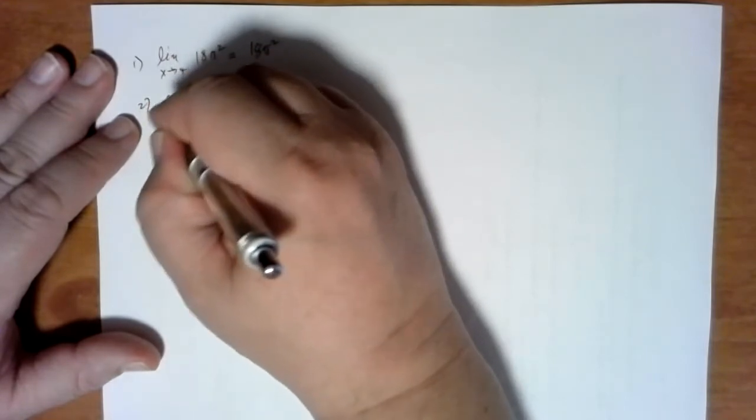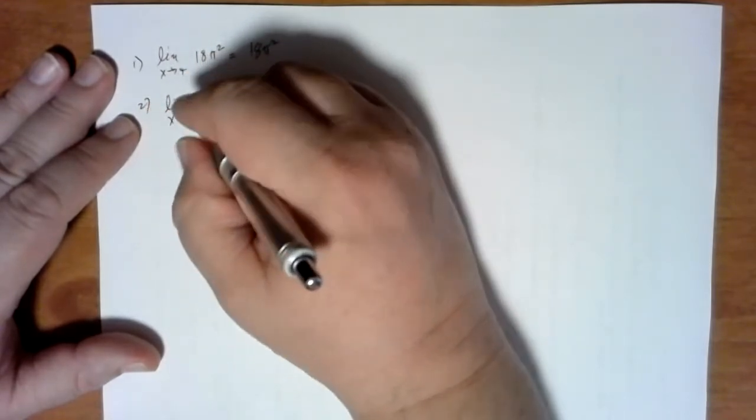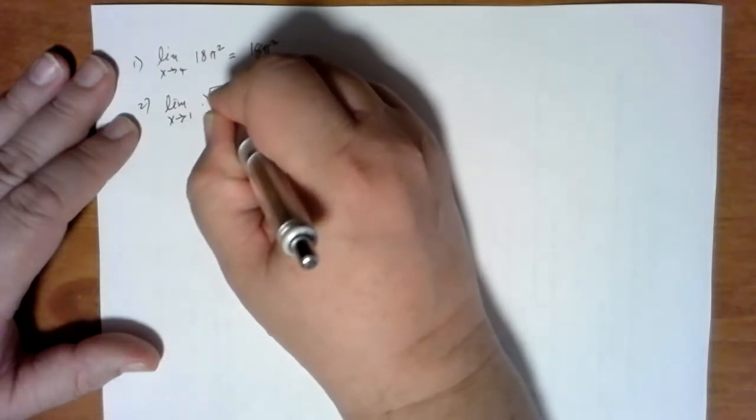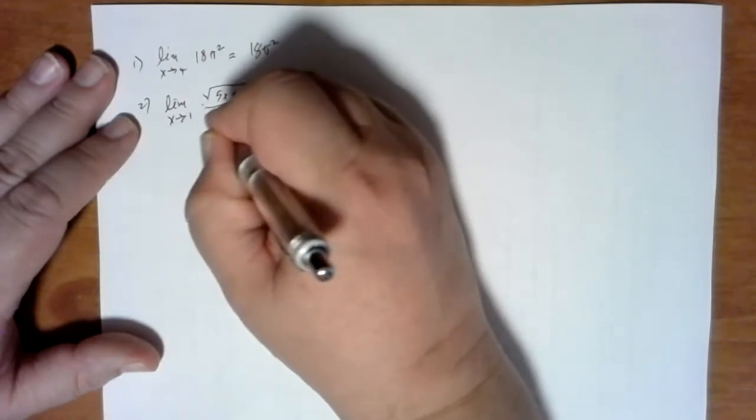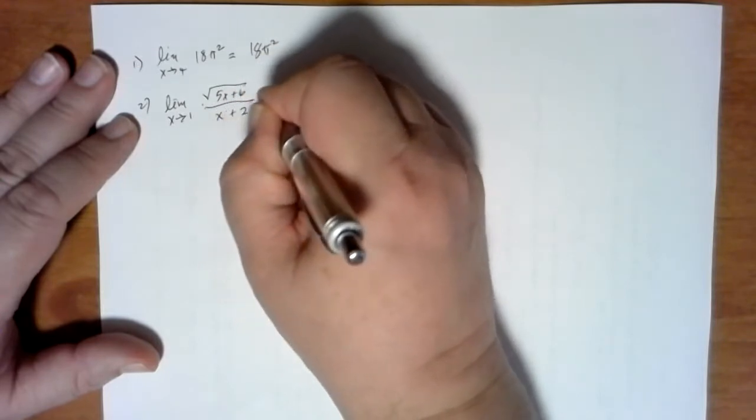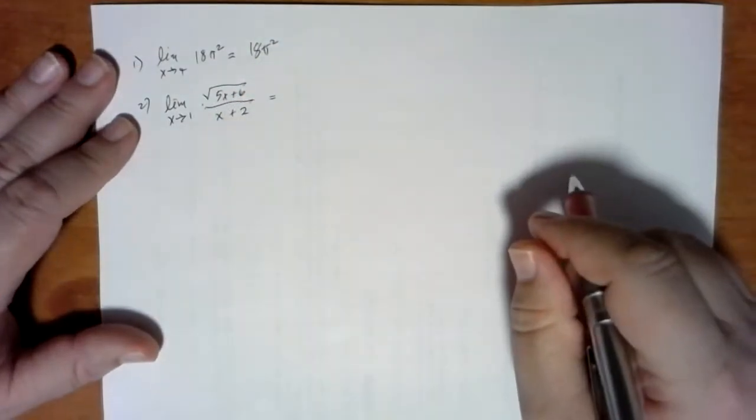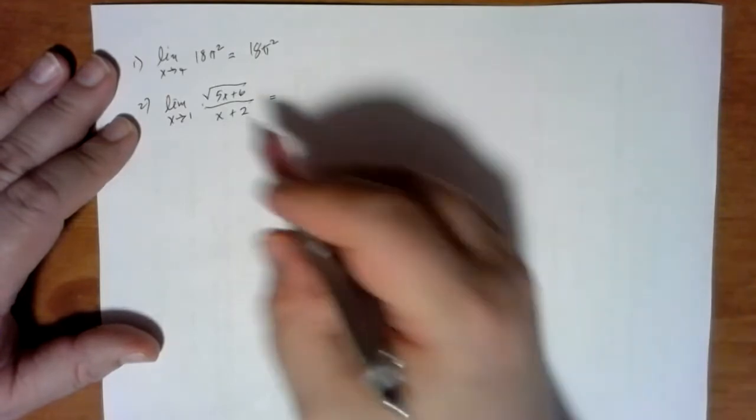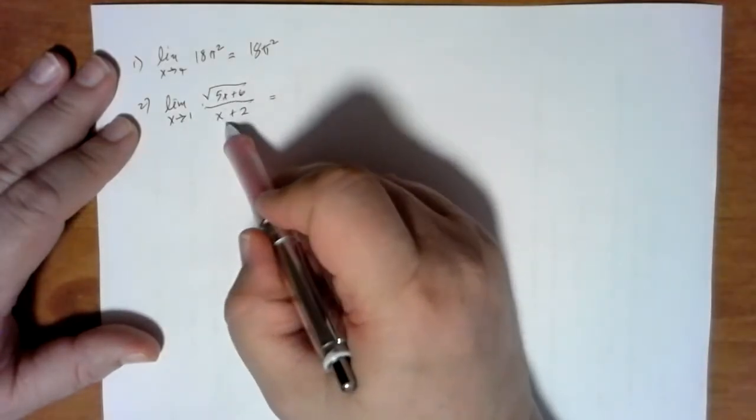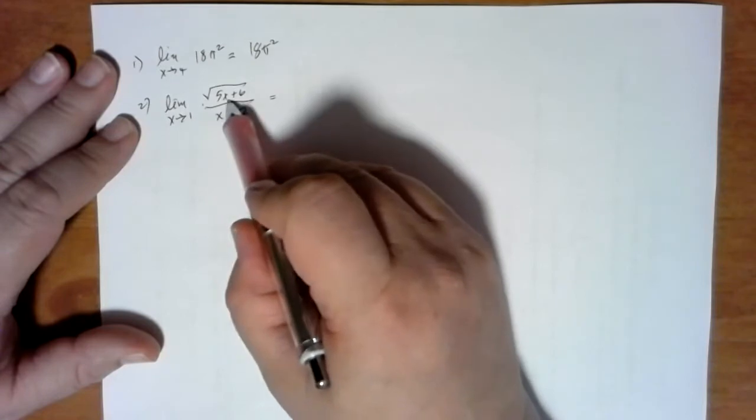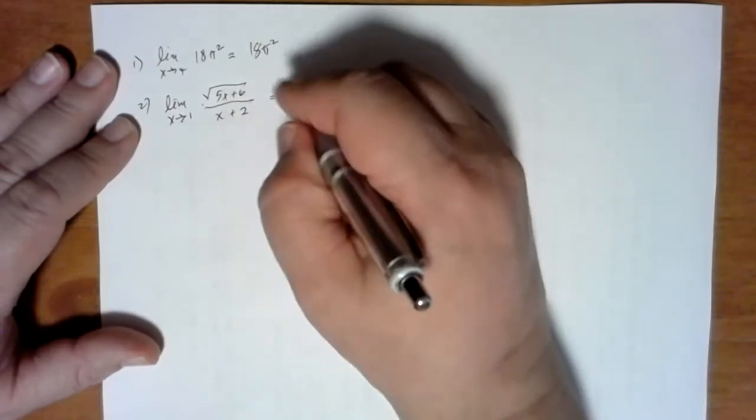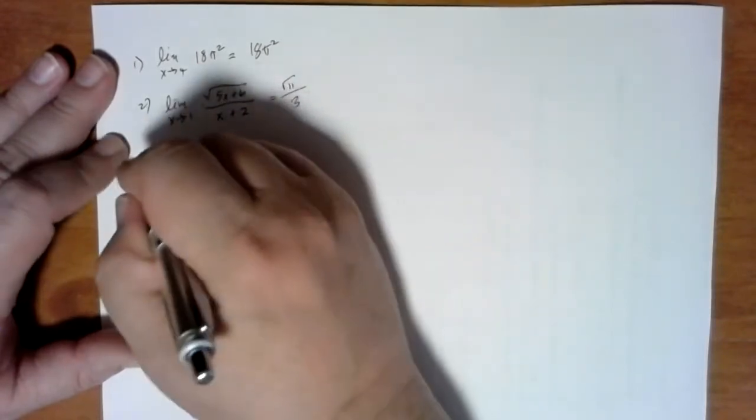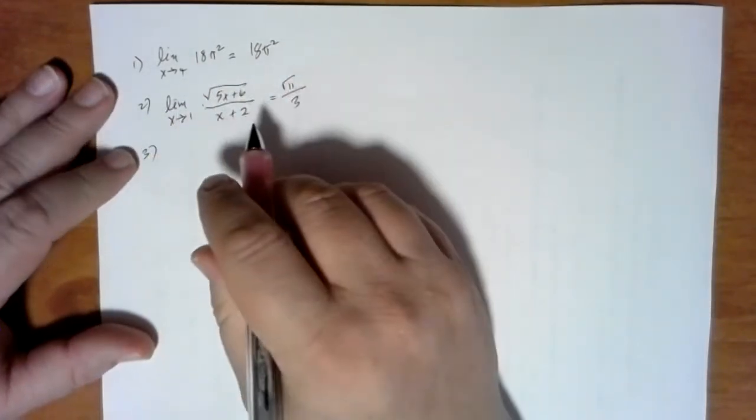How about the limit as x approaches 1 of the square root of 5x plus 6 divided by x plus 2. Did you notice that you can just put one in? And so if we just put one in, we get 6 plus 5 is the square root of 11 divided by 2 plus 1 is 3. Easy.